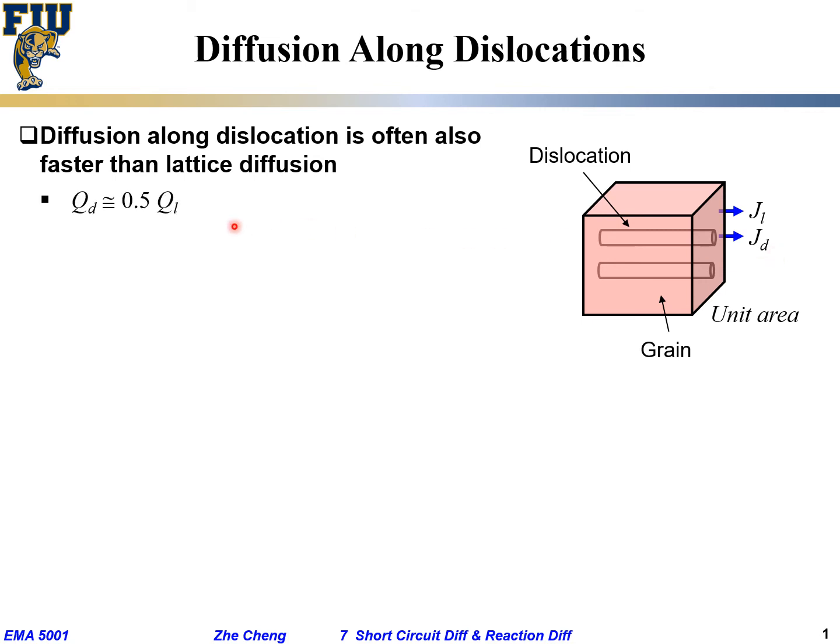So what people find is that the Q for activation energy, the barrier along D for dislocation, is only half of that for within the good lattice.